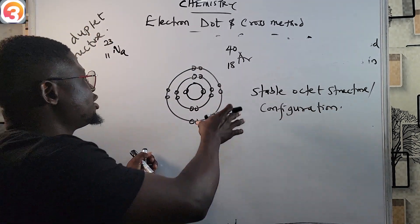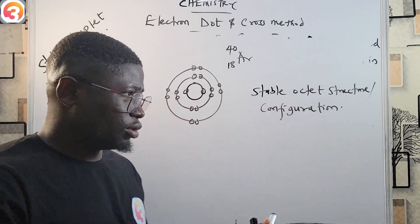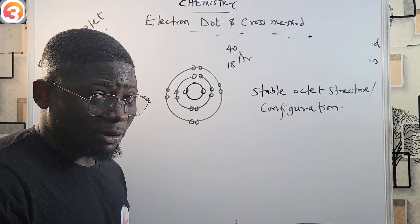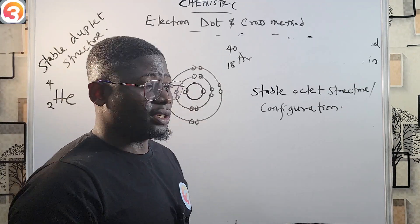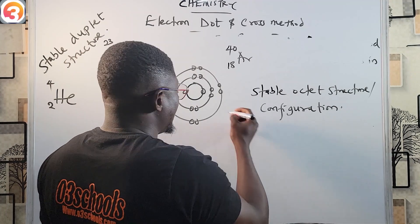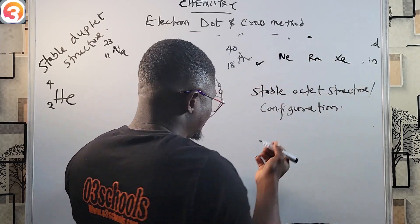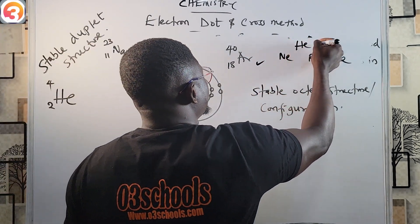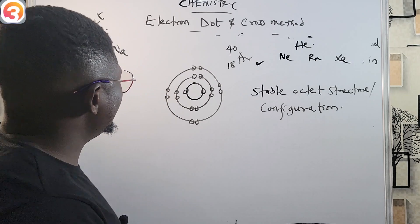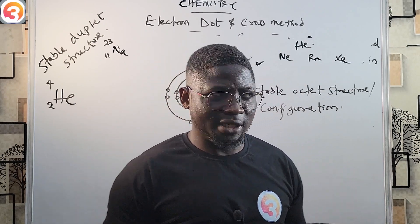Because argon has 8 electrons in the outermost shell, it has obtained the stable octet structure. An atom that possesses the maximum 8 electrons in its outermost shell is said to have obtained a stable octet structure. Note that all noble gases belong to Group 8 of the periodic table — they are stable and unreactive. Examples include argon, neon, radon, and xenon. Helium is also a noble gas but has a stable duplet structure, while the others have a stable octet structure.